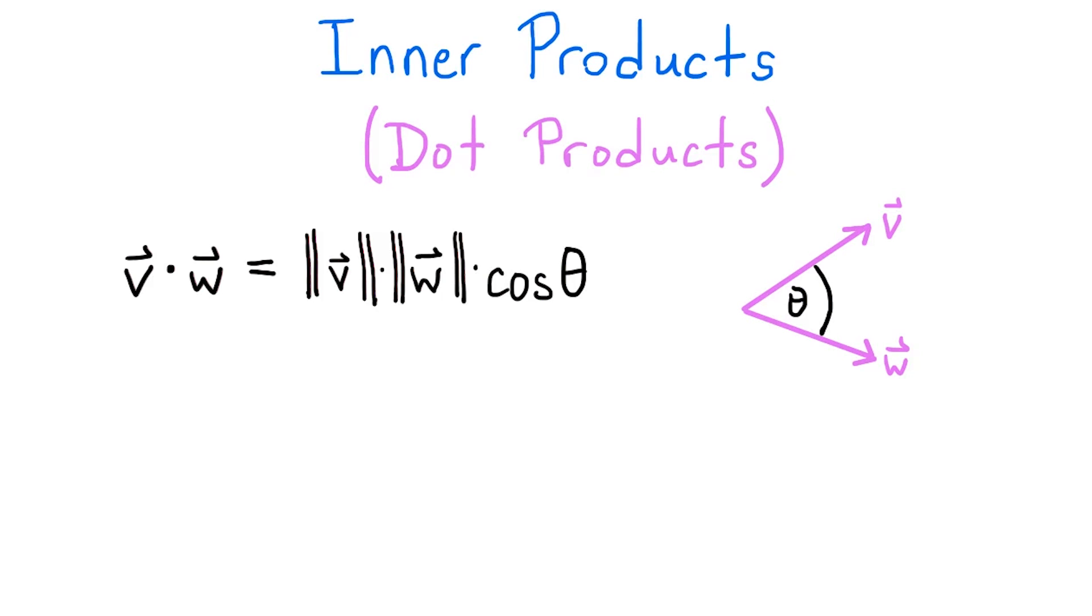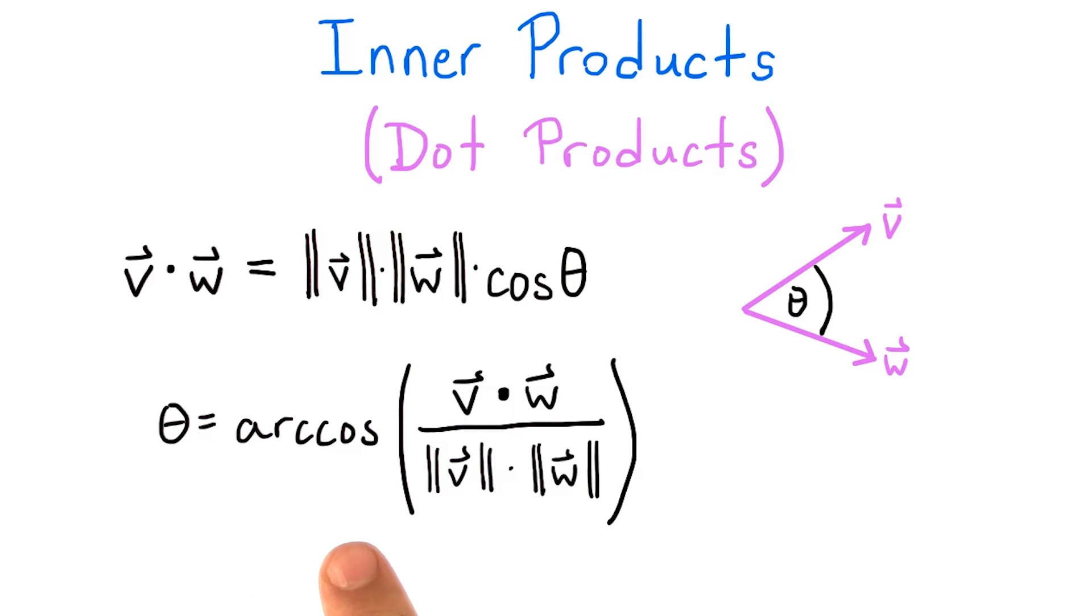Note that the inner product of two vectors is a number, not a vector. Using the inverse of the cosine function, also called the arc cosine, we can solve for this angle. It equals the arc cosine of the dot product of v and w divided by the product of the magnitudes of v and w.